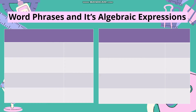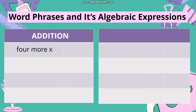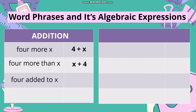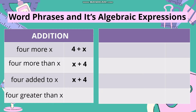Now let's look at word phrases and their algebraic expressions. '4 more x' in mathematical symbol is 4 plus x. '4 more than x' in mathematical symbol is x plus 4. '4 added to x' in mathematical symbol is x plus 4. '4 greater than x' in mathematical symbol is x plus 4.